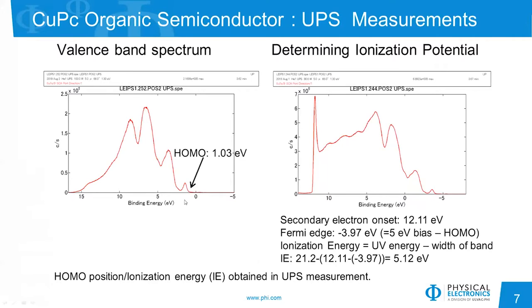Here are some examples of UPS measurements done on a copper thiocyanate material, an organic semiconductor. We see a typical valence band spectrum on the left, with an onset of counts at about 1.03 electron volts defining the highest occupied molecular orbital or HOMO. Using that information and the secondary electron edge cutoff — obtained by biasing the sample — we take the distance between the HOMO and that secondary electron edge, subtract it from the energy of the incoming UV photons, and that gives us the ionization energy. In this case, on the copper thiocyanate sample, it's measured as 5.12 electron volts.